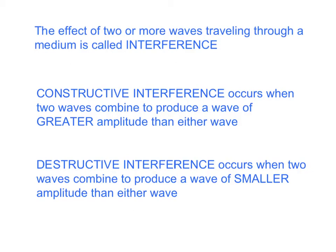To summarize: the effect of two or more waves traveling through the same medium is called interference. There are two types of interference. First, constructive interference occurs when two waves combine to produce a wave of even greater amplitude than either of the individual waves. Second, destructive interference occurs when two waves combine to produce a wave of smaller amplitude than either wave.